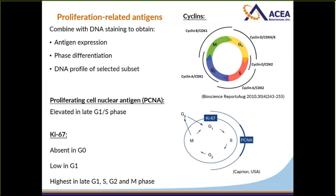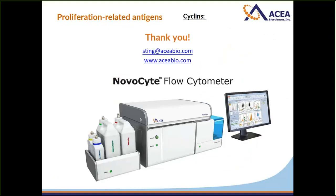That concludes the presentation on cell cycle analysis. The main take-home message is to first determine what type of experiment you want to do — for example, if you are most interested in quantifying S phase, use BrdU or EDU combined with a DNA stain. When choosing your dyes, take into account your flow cytometer's laser configuration and choose the appropriate DNA dye suitable for that system. For further questions or information, you can email sting@aceabio.com and find more about the NovoCyte flow cytometer at www.aceabio.com.